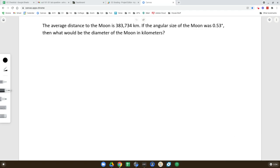All right, let's take a quick look at this question. It says the average distance to the moon is 383,734 kilometers. If the angular size of the moon was 0.53 degrees, then what would the diameter of the moon be in kilometers?